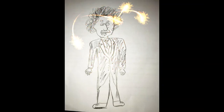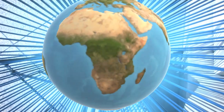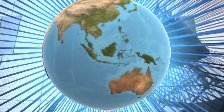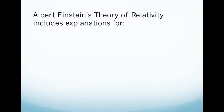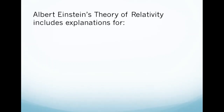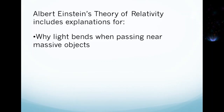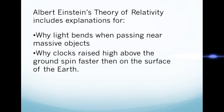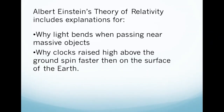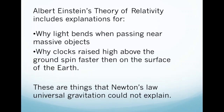Albert Einstein later came up with a revolutionary tweak to Newton's theory of gravity. In his general theory of relativity, he found that gravity was not a force in Newton's sense, but a result of the curvature of space-time caused by an uneven distribution of mass in the universe. His theory explained why light bends when passing near massive objects, and why clocks raised high above the ground run faster than on the surface of the Earth — observations that could not be explained under Newton's law of universal gravitation.